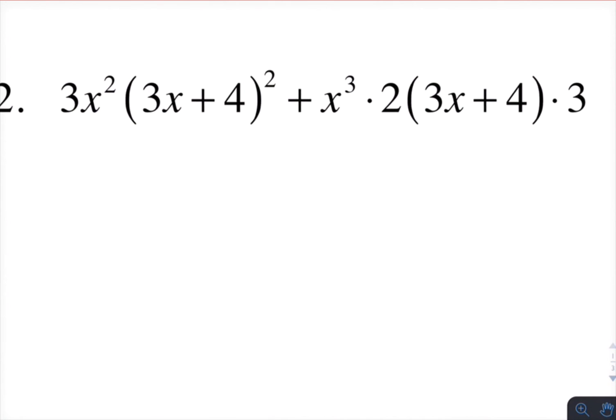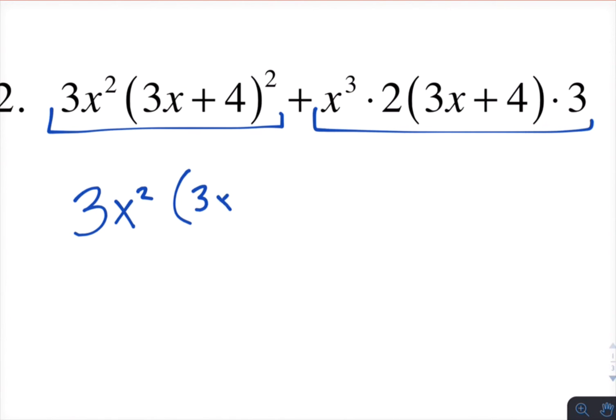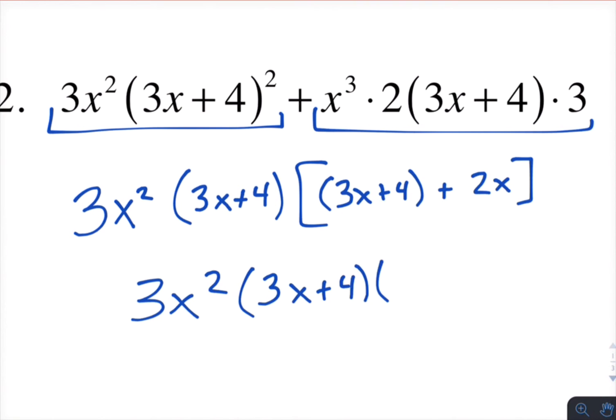This one looks a little funky, but it's actually just a binomial. Two terms. One term there, one term there. And what they have in common is a 3, an x squared, and a 3x plus 4. So what's left in the first term is a 3x plus 4. And what's left in the second term is a 2 and an x. So this is 3x squared times 3x plus 4 times 5x plus 4.